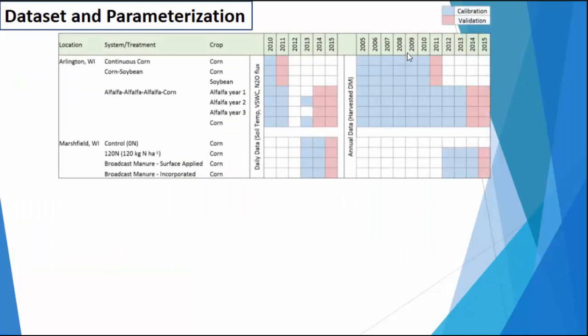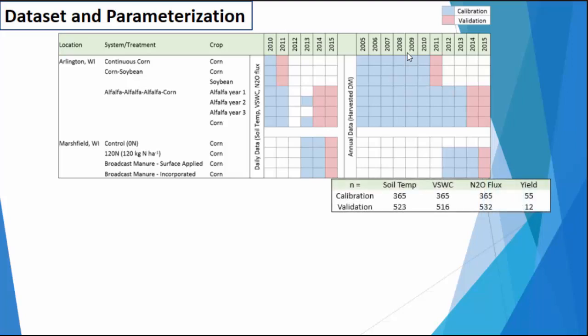We used data from three different collection studies over two sites in Wisconsin. In Arlington we had three cropping systems that included corn, soybean, and alfalfa. In Marshfield we had four different fertilizer or manure treatments, all growing corn. The blue cells indicate the years used to construct the calibration data set — the data we forced the models to simulate — and the red cells are withheld as a validation data set to test whether the models were predicting data when not specifically forced to. This gave us pretty high sample sizes compared with other modeling exercises in the literature: calibration about 350, and validation around 500.